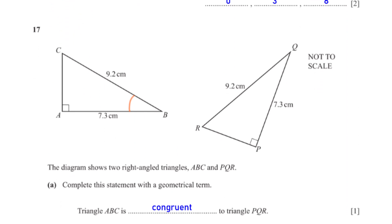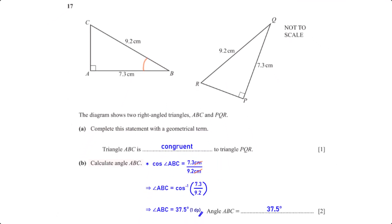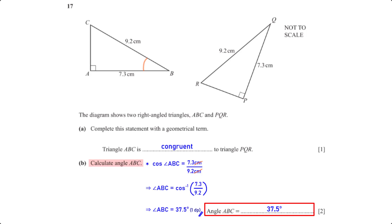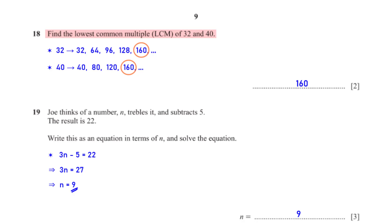The diagram shows two right-angled triangles ABC and PQR. The two triangles satisfy the RHS criteria — right angle, hypotenuse, side — so triangle ABC is congruent to triangle PQR. To calculate angle ABC we apply SOH CAH TOA: cos(ABC) = 7.3 ÷ 9.2. Solving gives angle ABC = 37.5 degrees, rounded to one decimal place.